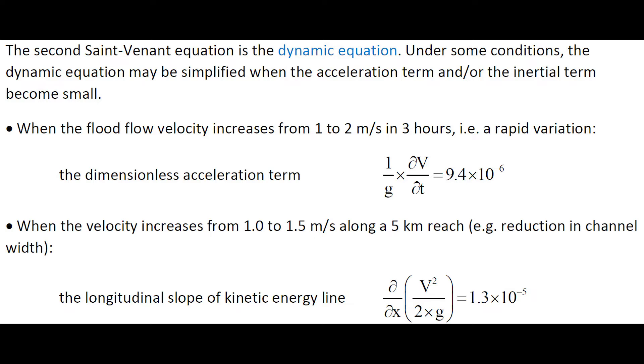When the velocity increases from one to one point five meters per second along a five kilometer reach, for example as a reduction in channel width, the longitudinal slope of the kinetic energy line is of the order of 1.3 times ten to the minus five.